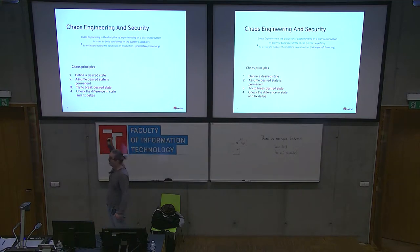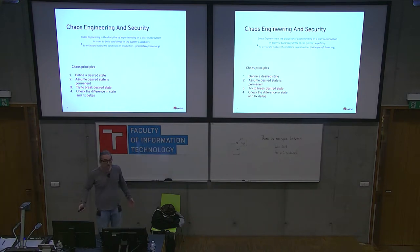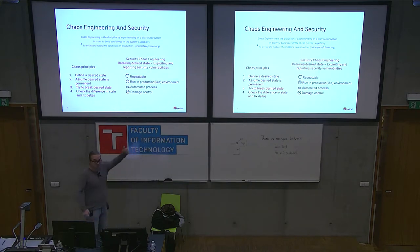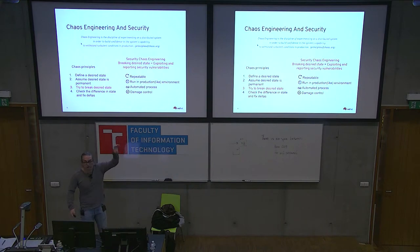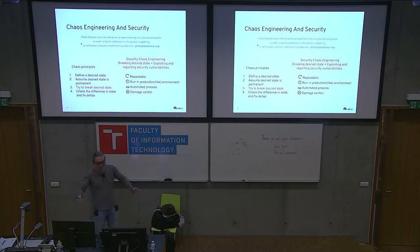In Kubernetes language, traditional chaos engineering means bringing down pods and nodes and seeing how your applications survive. With security, that third step is about inserting vulnerability scans. You could say this is penetration testing — and yes, it is — but not the way we know it. Not paying someone every two or three months for a report. I'm talking about a repeatable process.